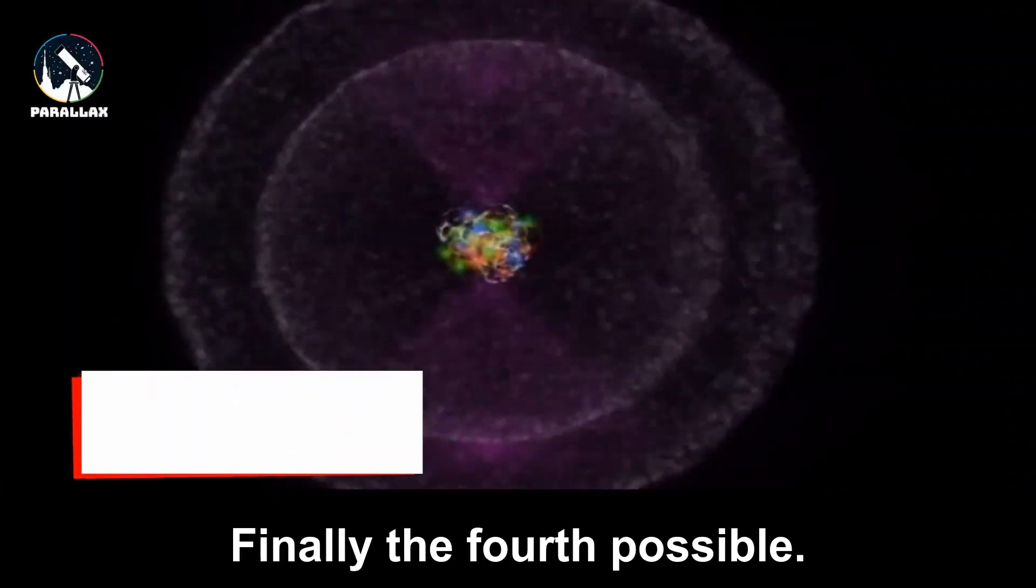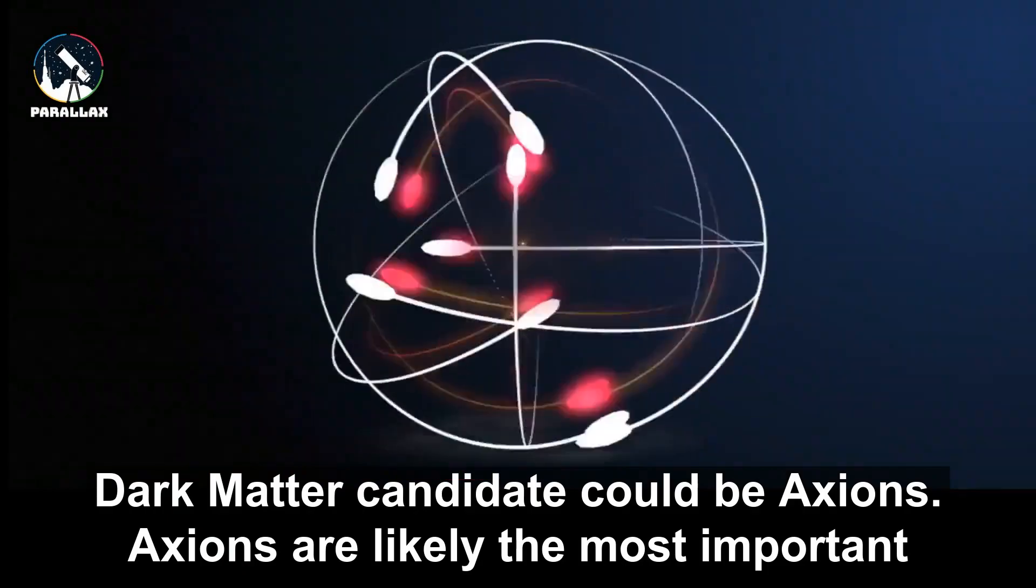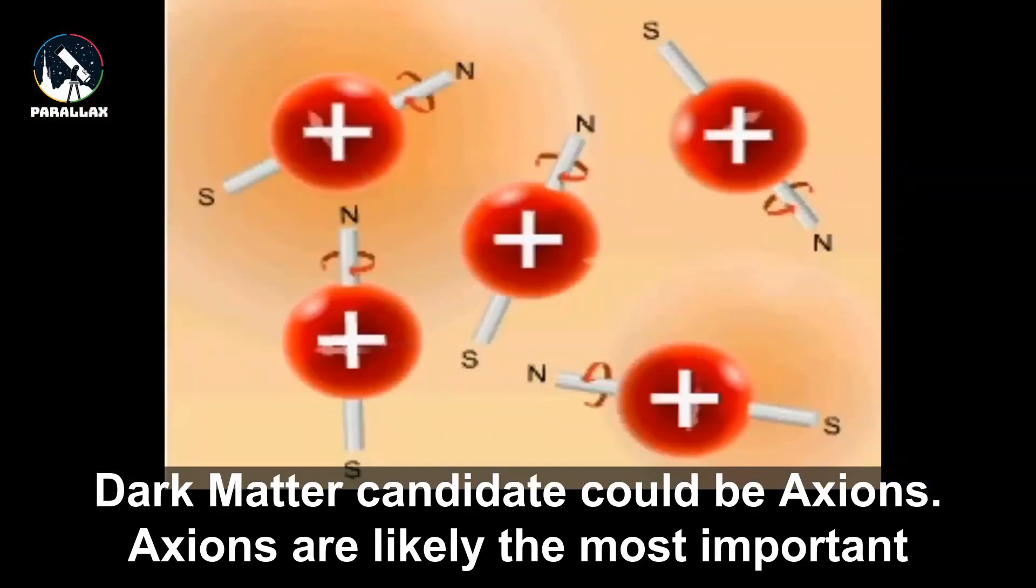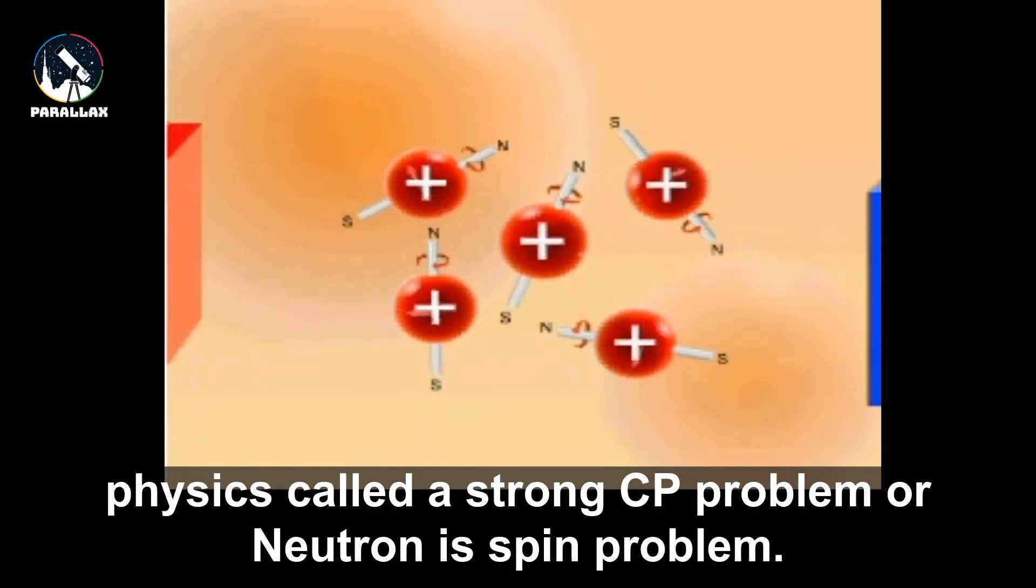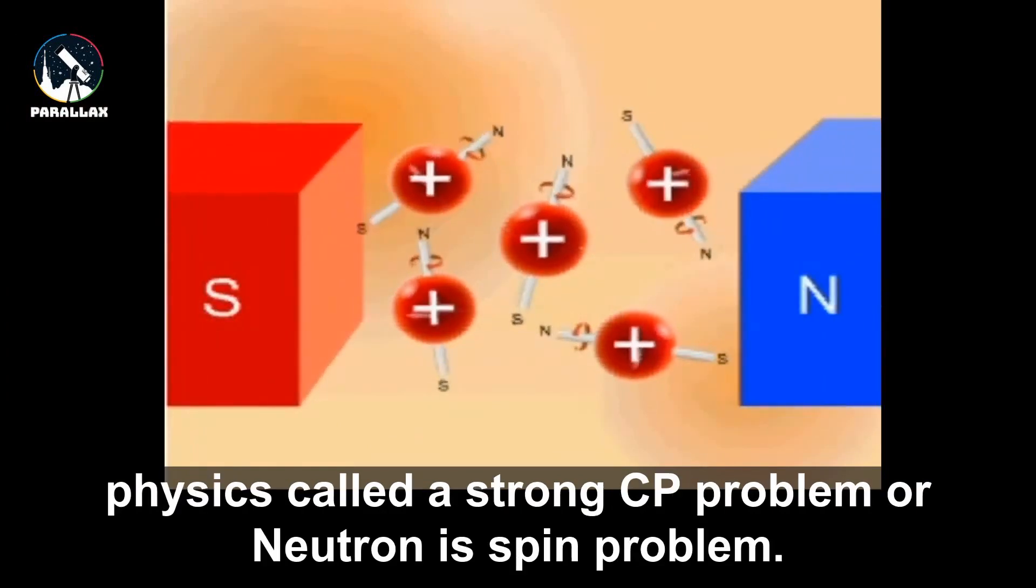Finally, the fourth possible dark matter candidate could be axions. Axions are likely the most important candidate for dark matter which solves another problem in physics called the Strong CP Problem or Neutron Spin Problem.